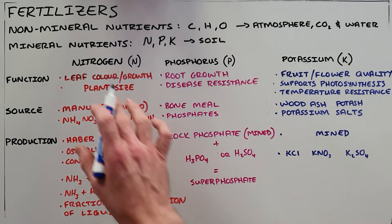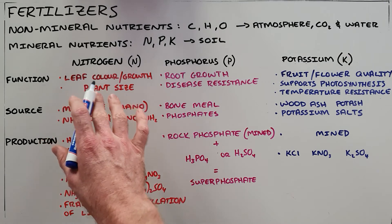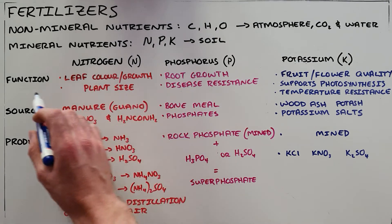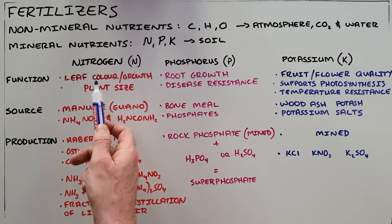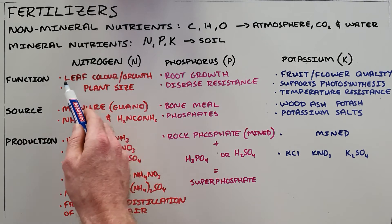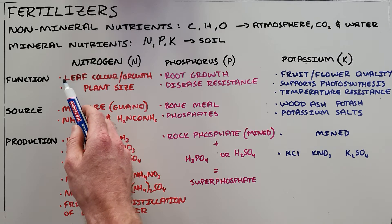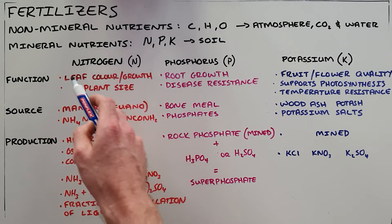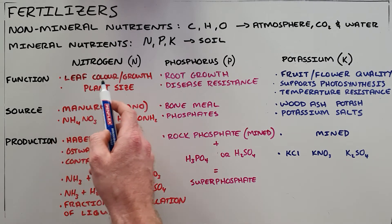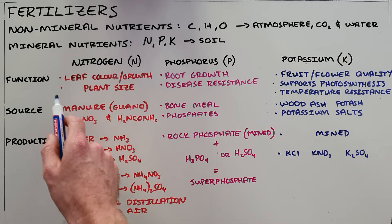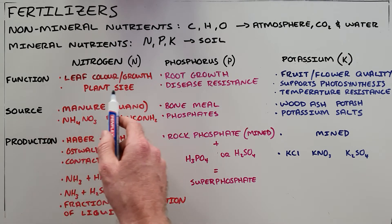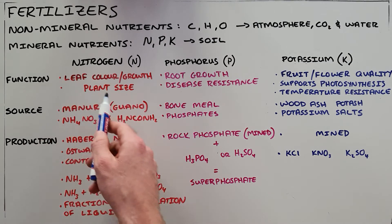For each of these nutrients it's necessary to know their function. Nitrogen promotes leaf growth, plays a role in the colour of the leaf, and also promotes plant size and overall growth.